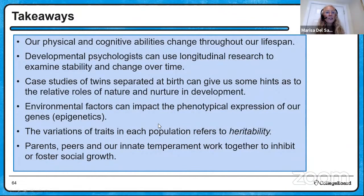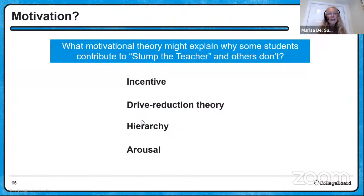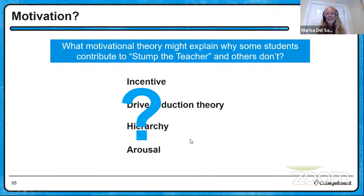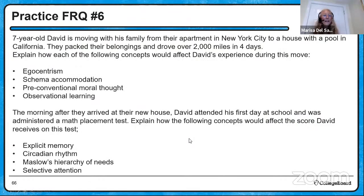Key takeaways: we have variations of traits in our population. Developmental psychologists use twin studies and longitudinal research to look at change over time. Environmental factors can impact the expression of our genes. You're going to be looking at motivation next — consider what motivational theory explains why some students contribute to Stump the Teacher and others don't. Here is your practice FRQ. This is David, who is moving with his family — there are concepts that will affect his experience and others that will affect a score on his test.